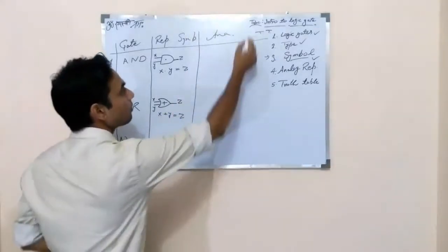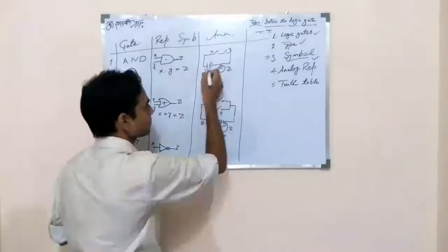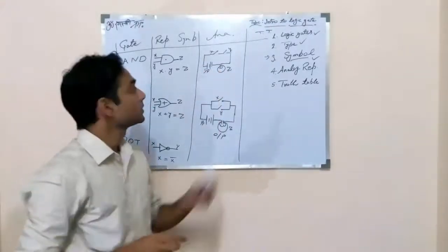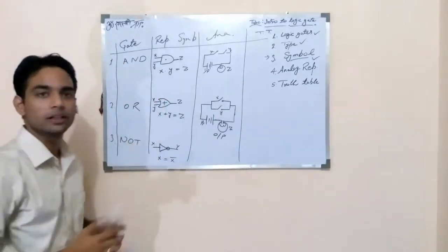So for analog representation I'll make this diagram. So these are the analog representation of particular and gate and or gate.